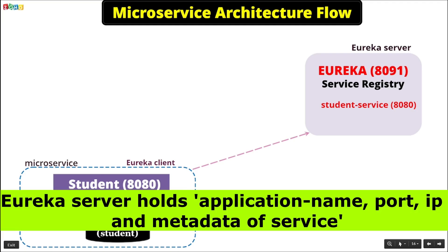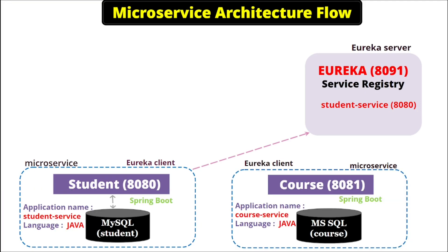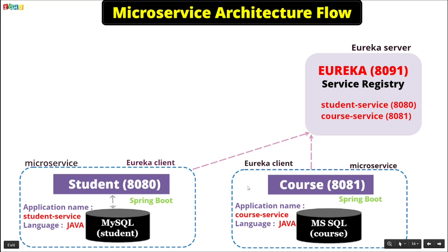The application name student-service is registered on Eureka. Now we have our second microservice, course, which we created in the fourth video. Whenever we deploy this microservice, it starts running on 8081 and registers itself to the Eureka server. Each microservice has the Eureka address in its application.yml configuration file, so they have the complete address of where Eureka is running, and whenever they deploy, they automatically get registered to that server.